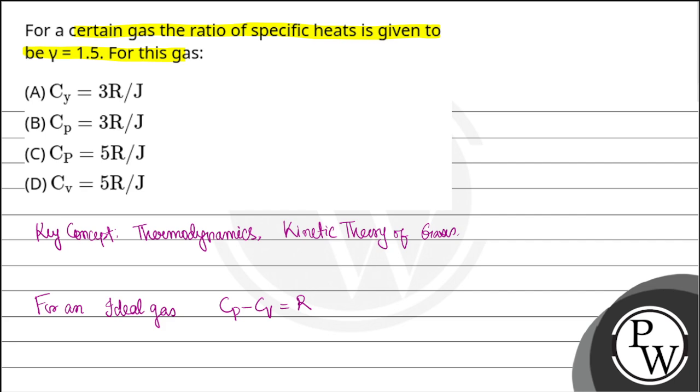So, this is a universal relation for every ideal gas, where Cp and Cv are molar heat capacities at constant pressure and volume respectively.